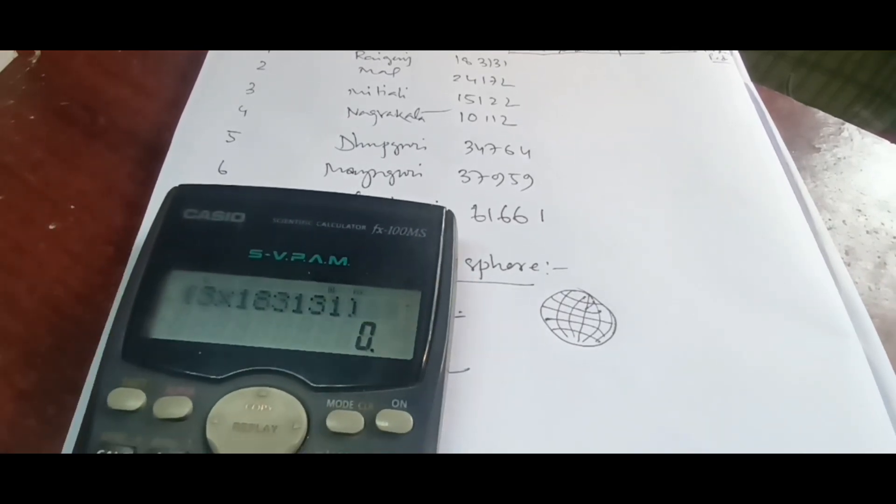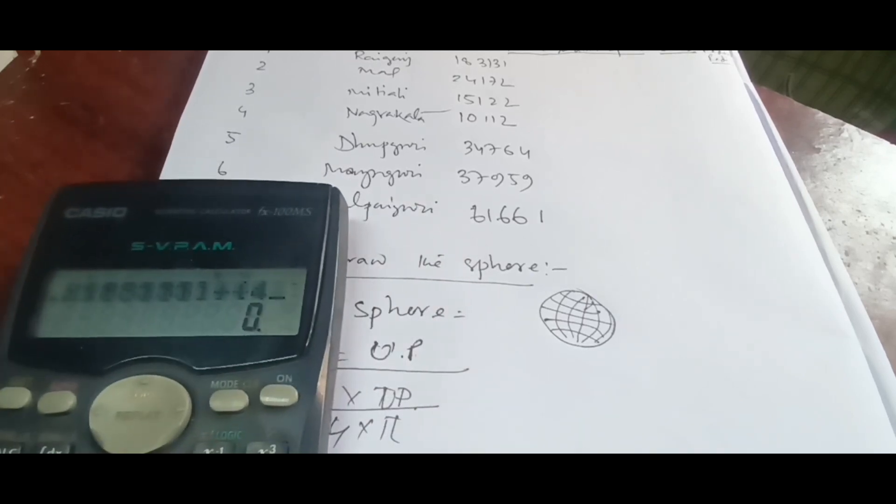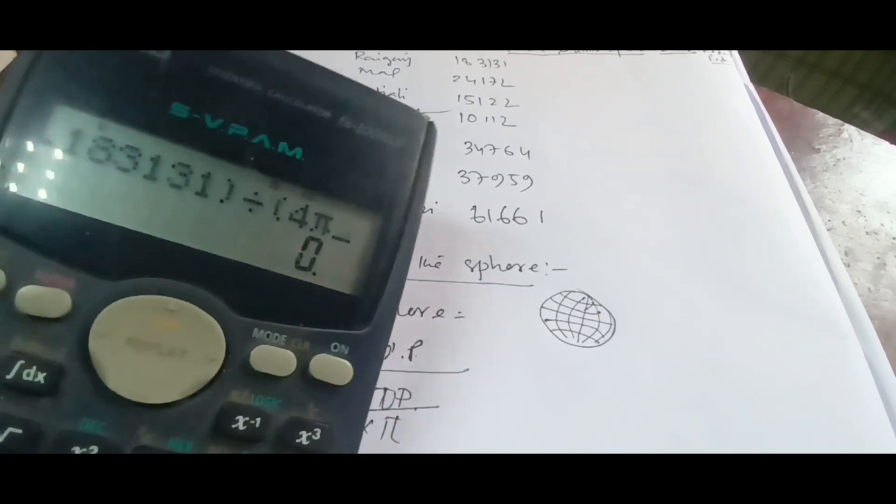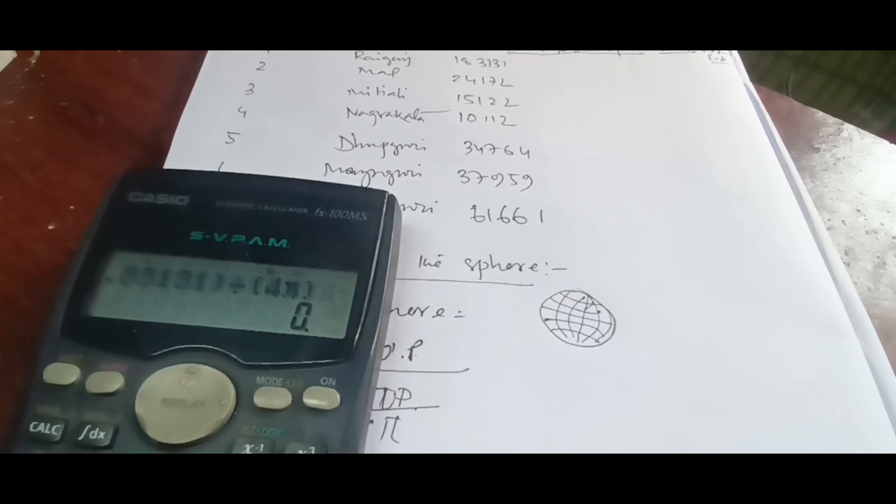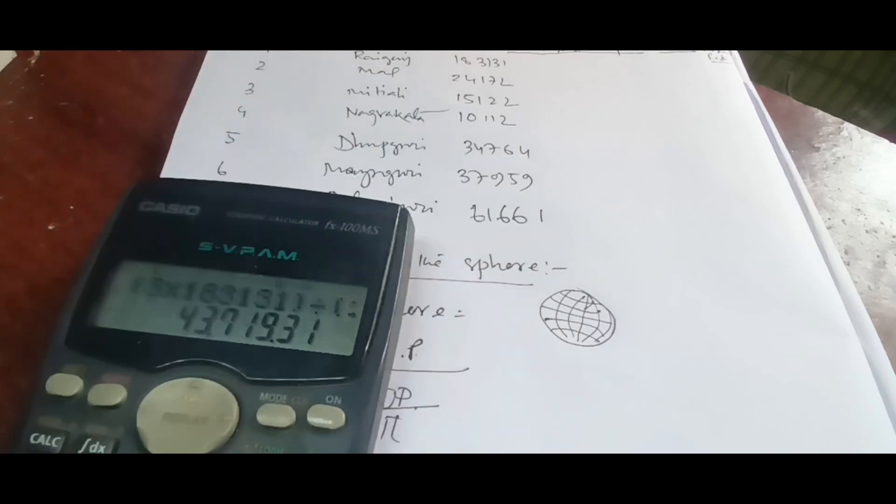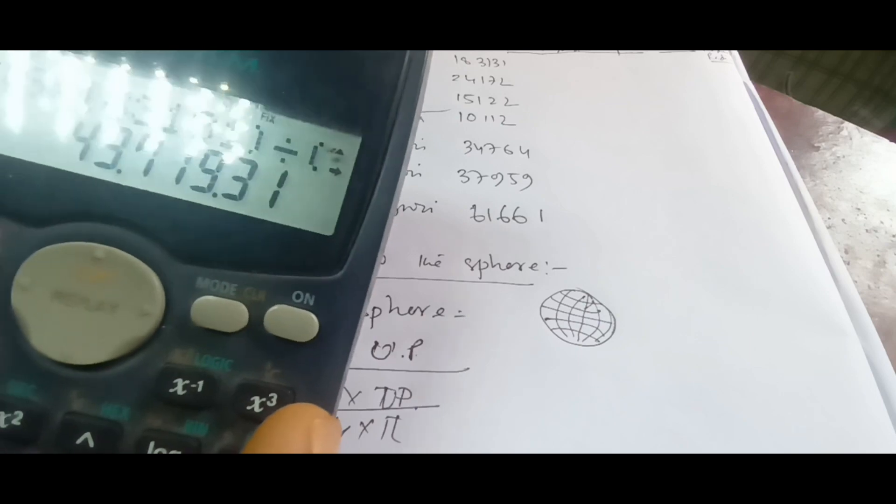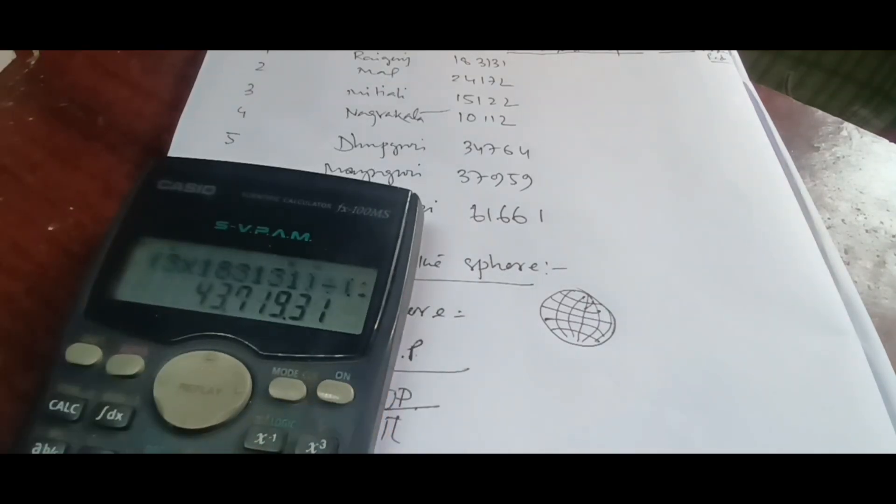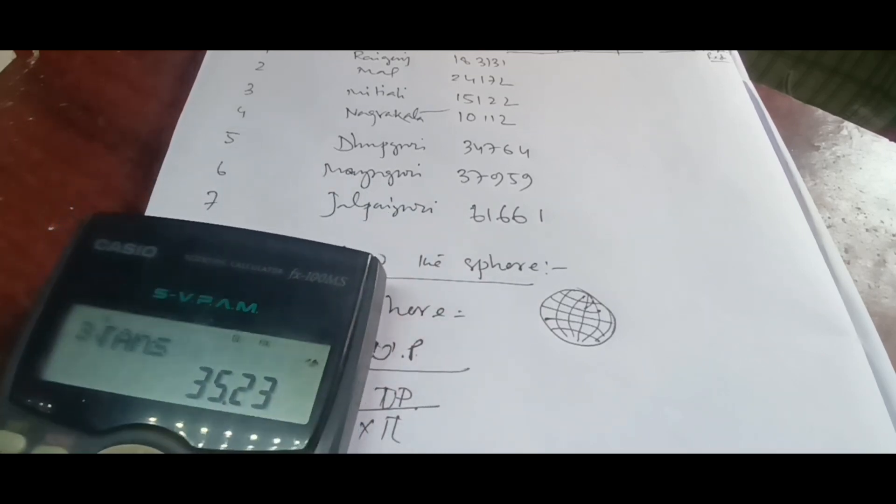Divide, and first bracket again 4 pi, there is a pi, then close the bracket and press equal to. You get this value, then after that press shift and you will get this cube sign here. So shift and this cube sign and press equal to. We are getting this value 35.23.